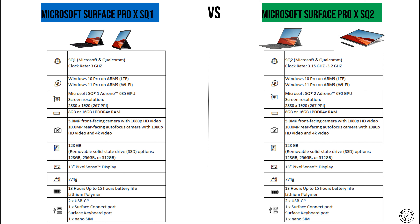For the graphics, the SQ1 comes with an Adreno 685 GPU while the SQ2 comes with an Adreno 690 GPU. Screen resolutions are pretty much the same, and both of them come with RAM of either 8 gigabytes or 16 gigabytes depending on the configuration.